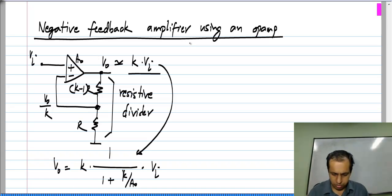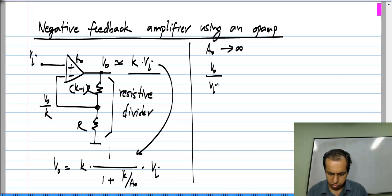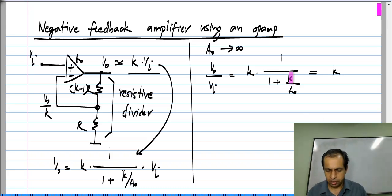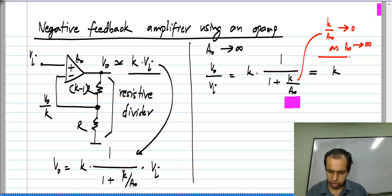Now, if we take the limit of A_naught tending to infinity, we see that V_naught/V_i, which is k·[1/(1 + k/A_naught)], is exactly equal to k, because as A_naught tends to infinity, the term k/A_naught goes to 0.